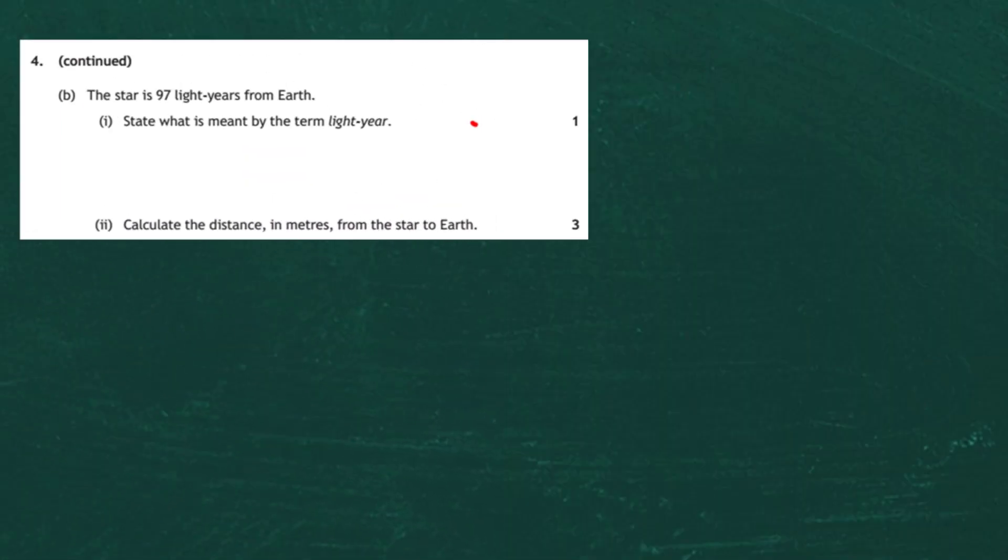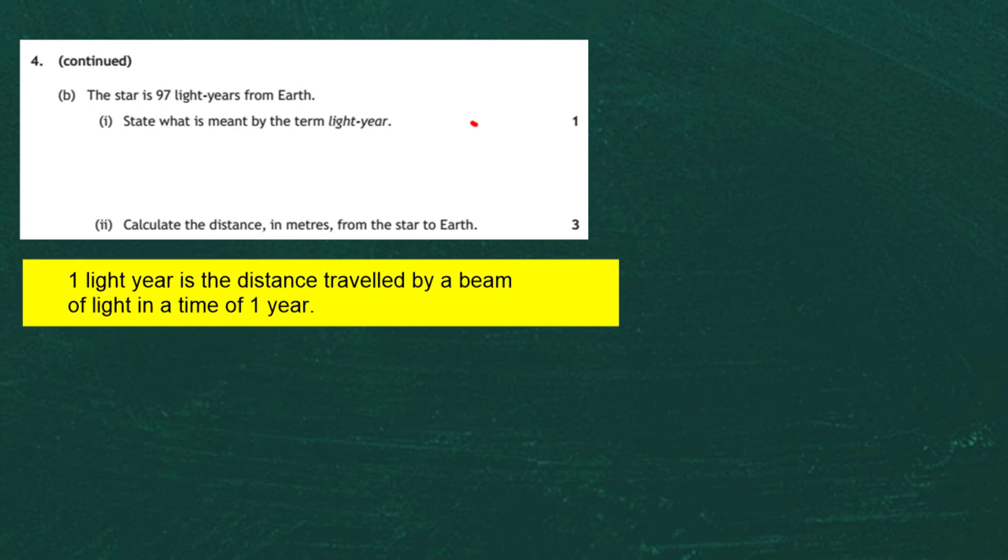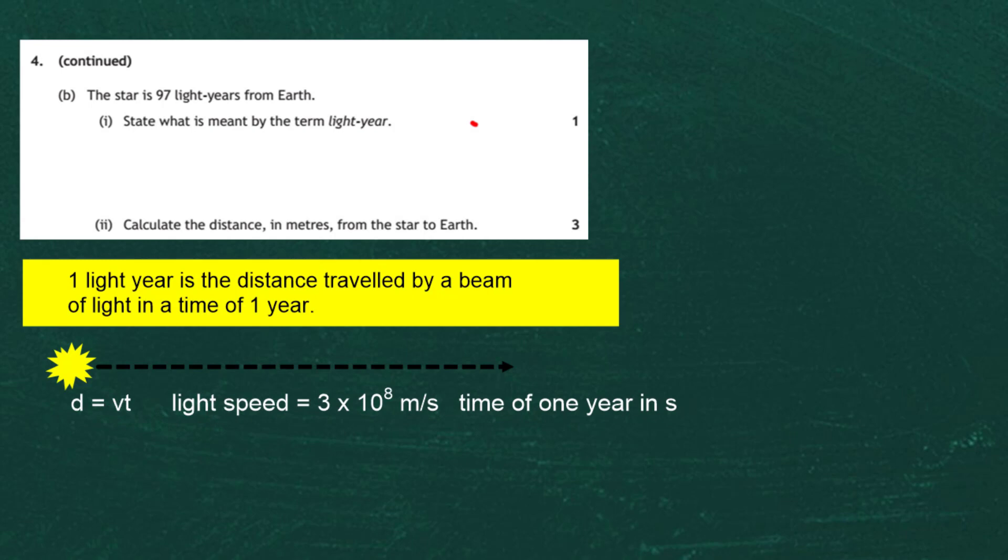Question 4 continues, part B. The star is 97 light years from Earth and for one mark we are asked to state what is meant by the term light year. Well, light year is a measure of distance. One light year is the distance traveled by a beam of light in a time of one year. So imagine setting off a pulse of light and then you have it traveling through space, and using the formula distance equals speed times time, and knowing that the speed of light is 3 times 10 to the power of 8 meters per second, then we can calculate the distance that light travels in one year.